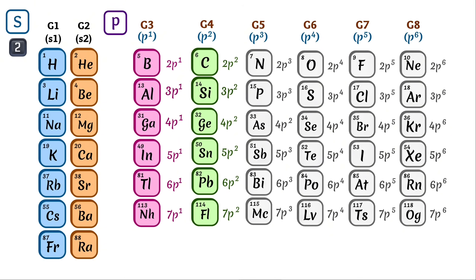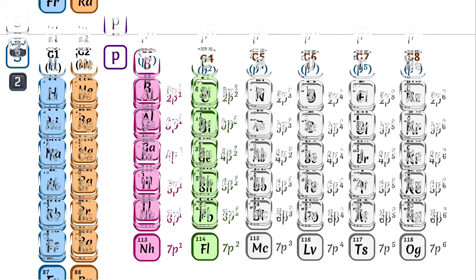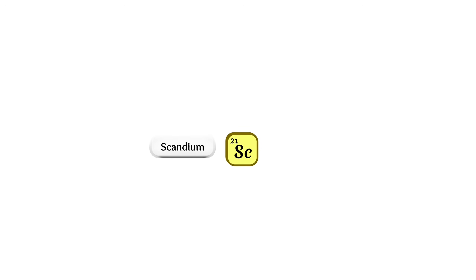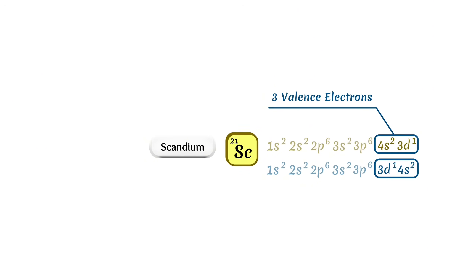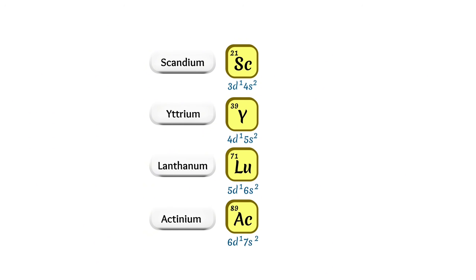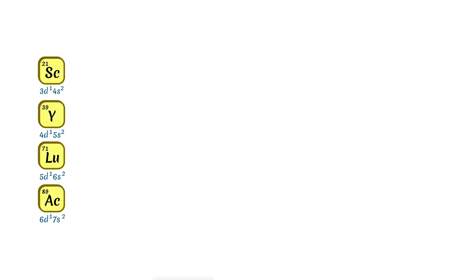Now look at scandium, which has 21 electrons. Its electron configuration by increasing shells is 1s²2s²2p⁶3s²3p⁶3d¹4s². In scandium, electrons in both the 3d and 4s orbitals are considered valence electrons — the d orbital has 1 valence electron, and together with the 2 electrons in the outermost s orbital, there are 3 valence electrons total. These 3 valence electrons can be transferred to other elements during chemical reactions. Elements such as yttrium, lanthanum, and actinium share similar electron configurations, so we create a new group with configuration d¹s².